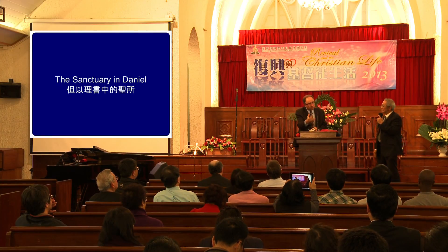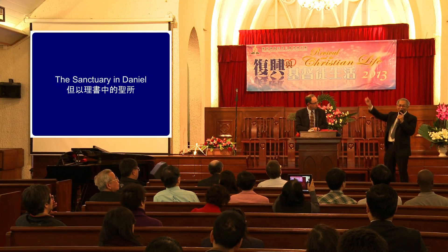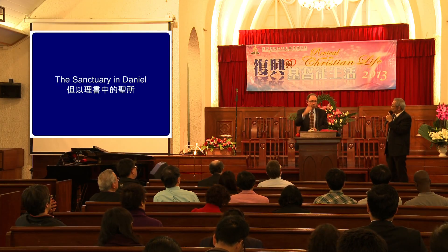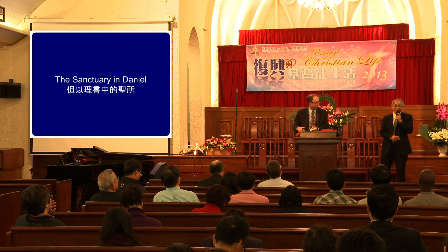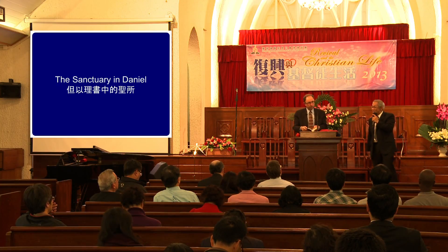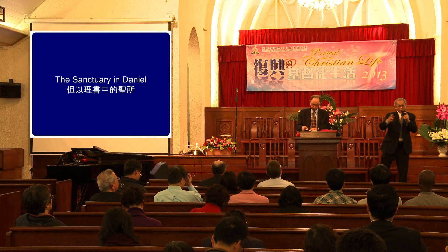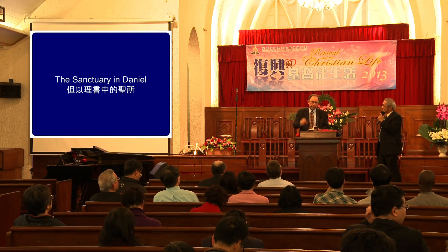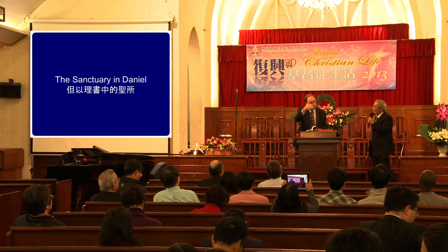Until the stone came and destroyed everything. In chapter 7, you have a sequence of beasts — each beast represents an empire. Then as the climax of the chapter, you have a vision of the Son of Man approaching the Ancient of Days.